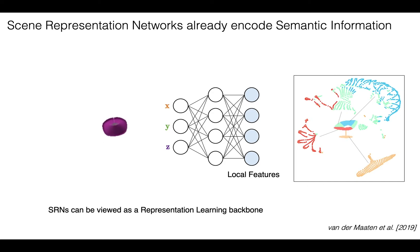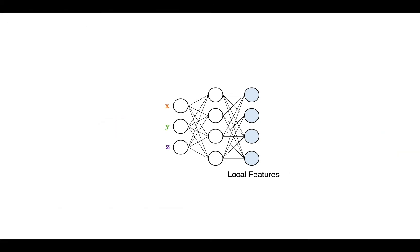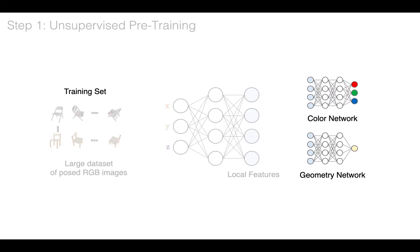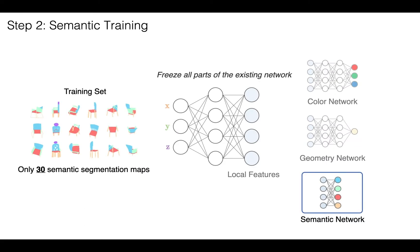We can then view Scene Representation Networks as a representation learning backbone and use a semi-supervised approach for semantic labeling. First, we train the vanilla SRNs unsupervised using a large training set of posed RGB images. We then freeze all parts of the existing network and train a linear classifier on the pre-trained features using a small dataset of only 30 semantic segmentation maps.